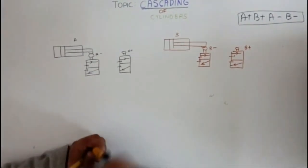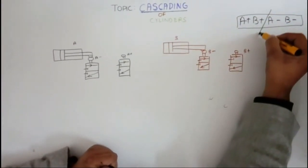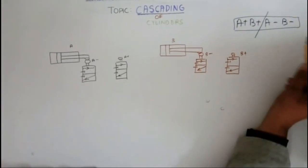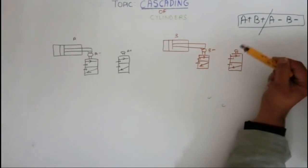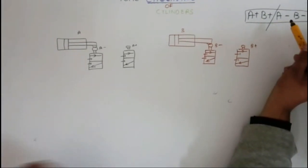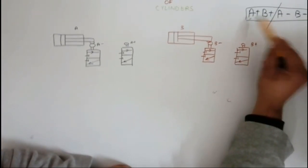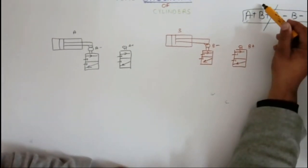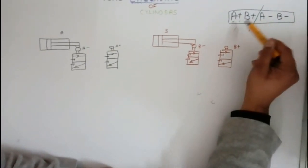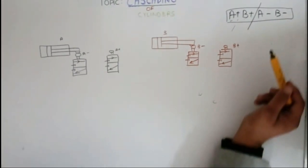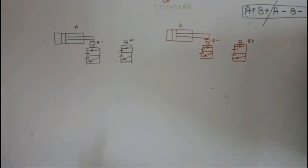To begin, we need to separate this output into groups of two or three. Note that within a group, the same letter should never repeat, because a cylinder cannot extend and retract at the same time. So A+ and B+ form one group, and A− and B− form another group. This is the required grouping.